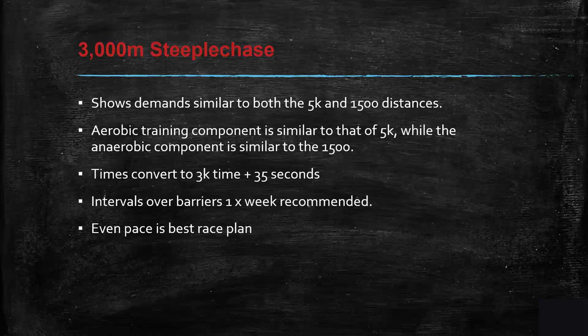The 3K steeplechase has a demand similar to the 5K and 1500 combined. Aerobic training components are similar to 5K. Times convert from a 3K time about 35 seconds. Include intervals over barriers at least once a week — even pace is best in race planning. Don't go too high in volume or too many reps over barriers, because athletes need recovery. Even with high-end hurdlers, I don't hurdle every day, and you shouldn't with steeplechasers either.